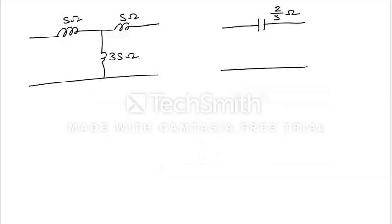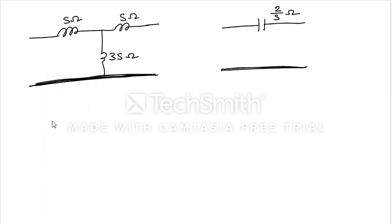Imagine this network is exactly placed on this network. If I place this combination exactly on this, you can see this ground and this ground will overlap exactly — this ground and this ground will overlap. So what type of connection is this? Parallel connection. So the shape of the network is in the form of a T-shape.